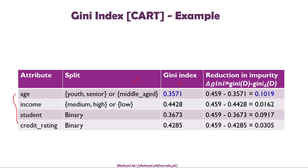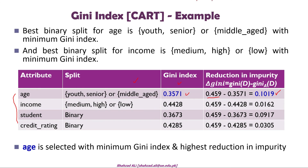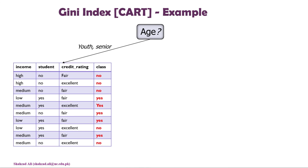After calculating optimal splits for all attributes, we use the formula: reduction in impurity = Gini(dataset) minus Gini(attribute). The dataset Gini is 0.459. We subtract each attribute's optimal Gini from 0.459 and select the attribute with the highest reduction in impurity. The age attribute is selected as the root node.